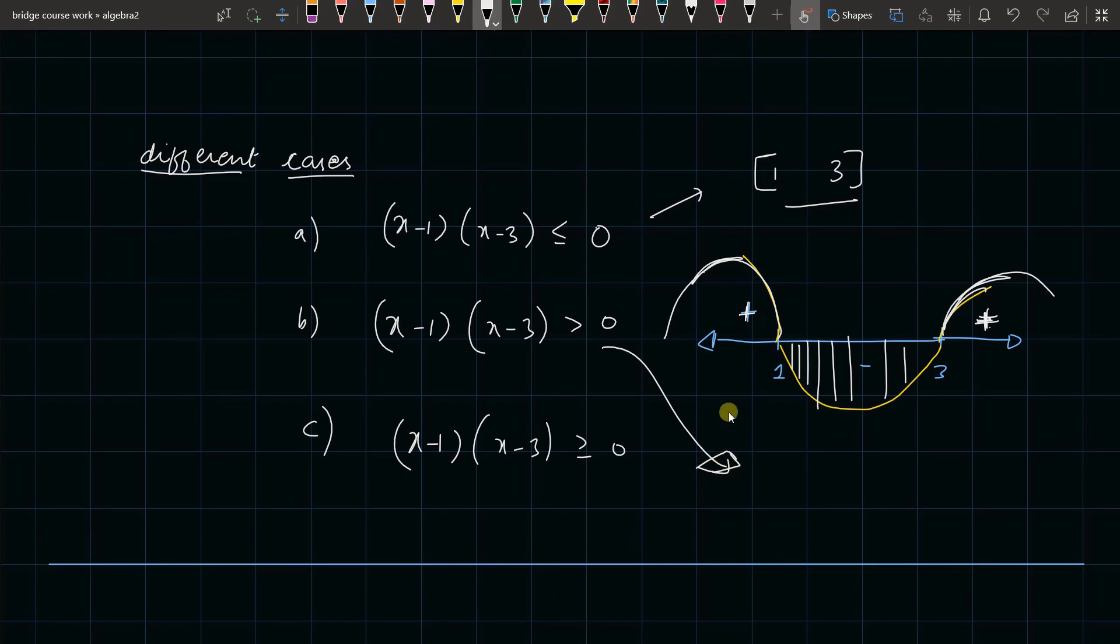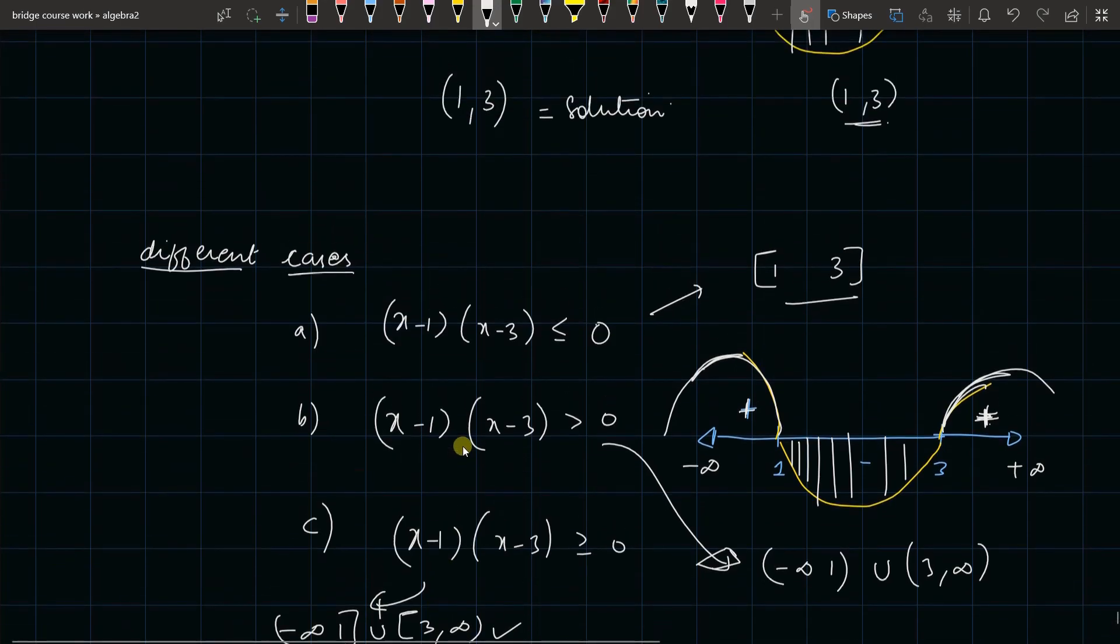What about this one? I can clearly see -∞ to 1 it is greater than equal to, and 3 to ∞ it is greater than. So these are the three scenarios we see, and these are the solutions for all the three scenarios.